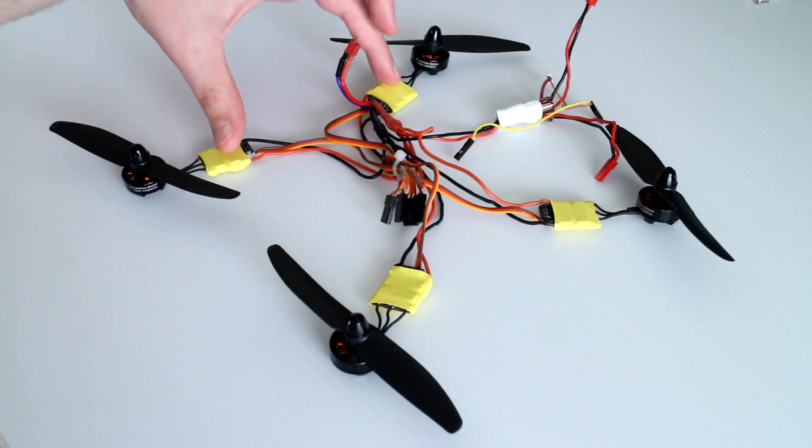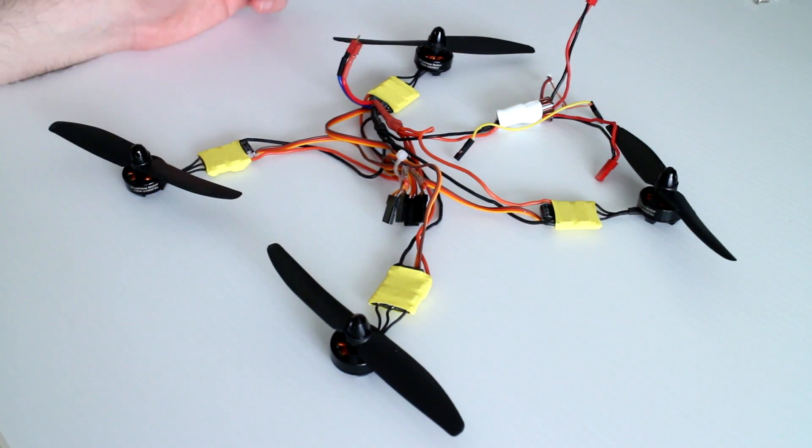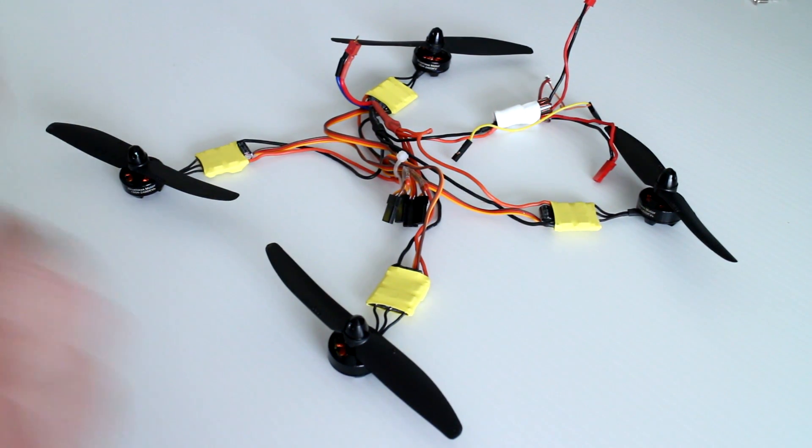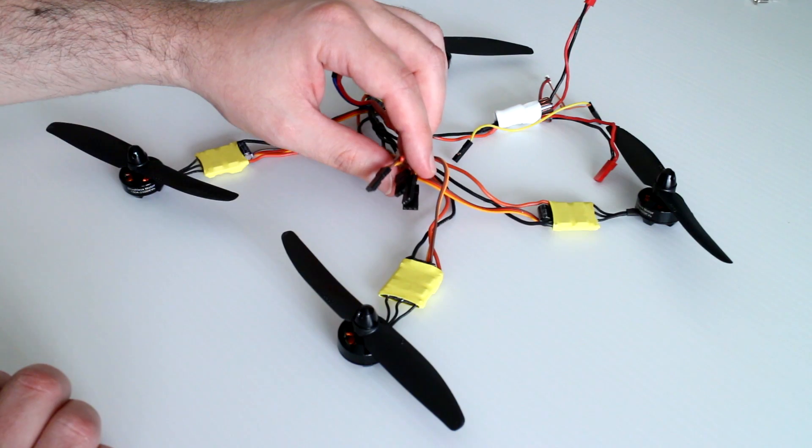With regards to the five volt BECs that exist in all these ESCs, you don't want all four BECs connected to the same common rail which they will be if you just plug them into your flight controller. You do want to isolate three of them.